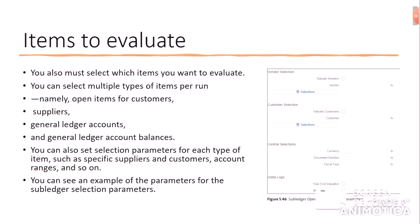In the selection screen we can see vendor selection — valuate vendors — customer selection, valuate customers and customer central selections. Additional parameters include currency, document number, fiscal year, delta logic, year-end valuation, and mid-year valuation.